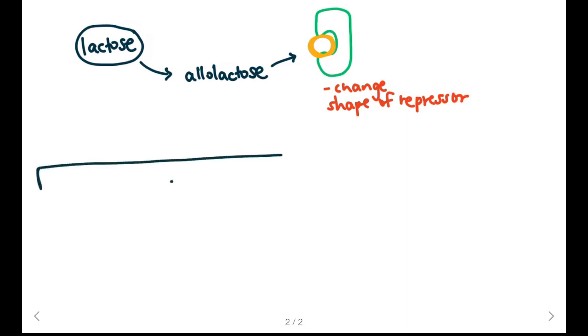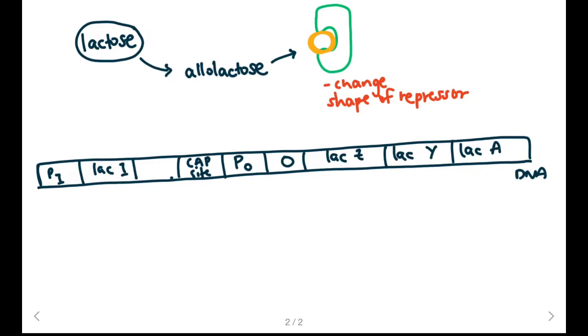When we look at our DNA sequence we'll notice that RNA polymerase can still bind to the promoter, but our repressor cannot bind to the operator because allolactose has bound to the repressor and changed its shape. Because the repressor cannot bind to the operator, RNA polymerase can freely transcribe the three genes.